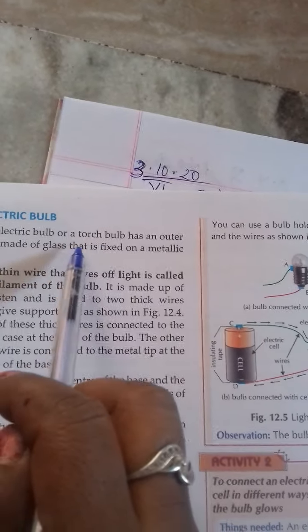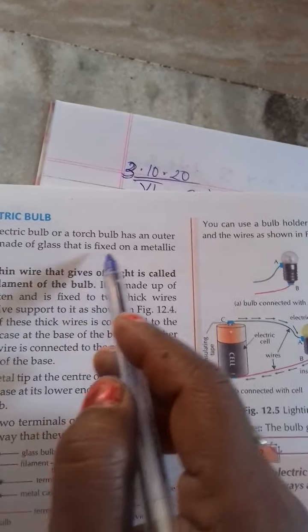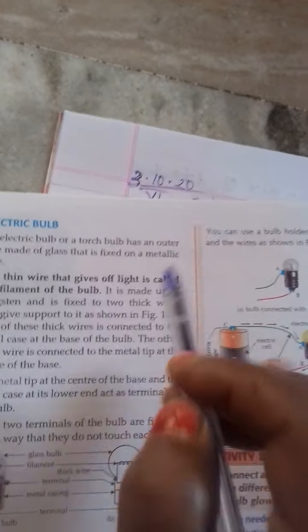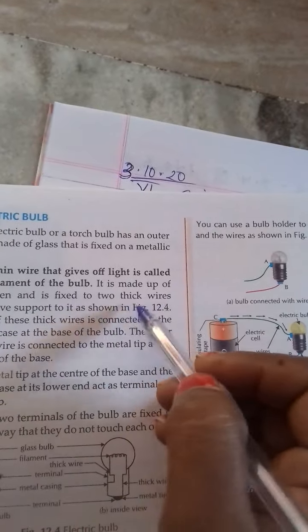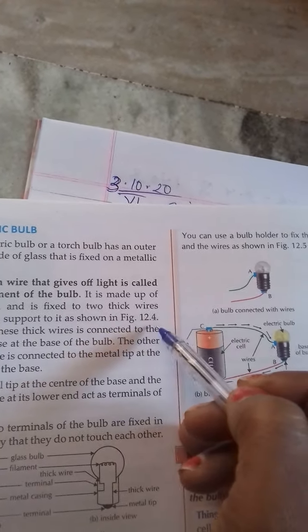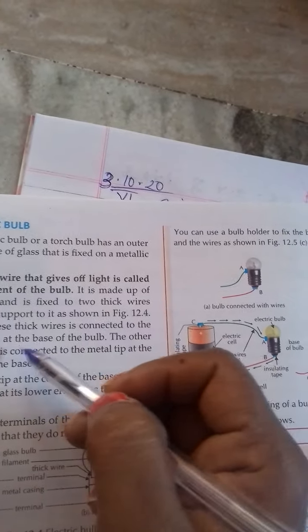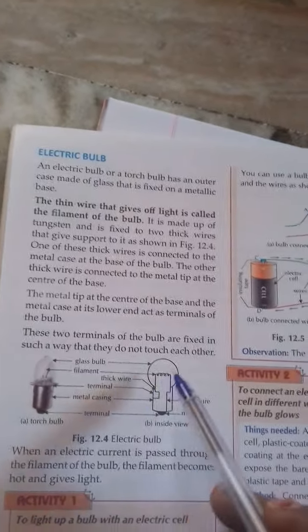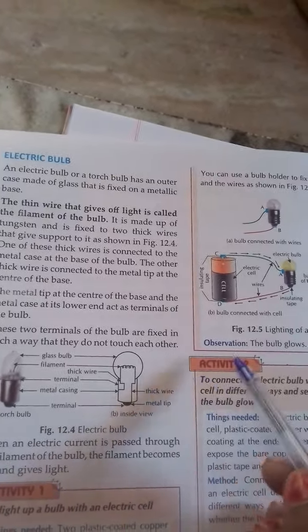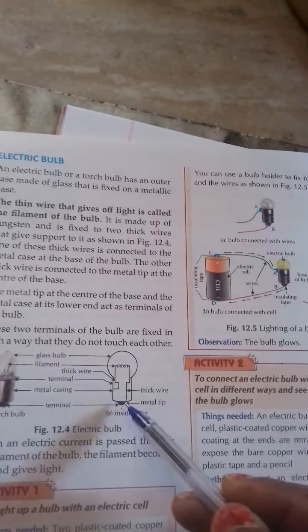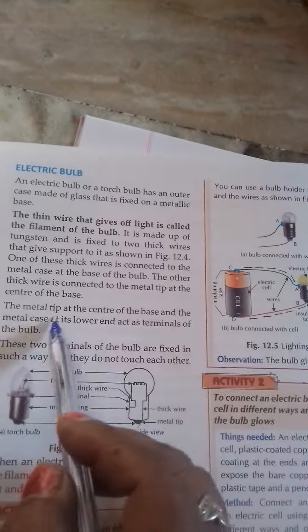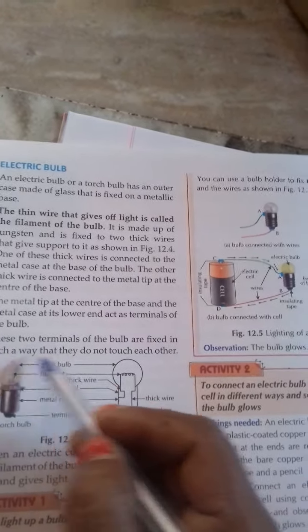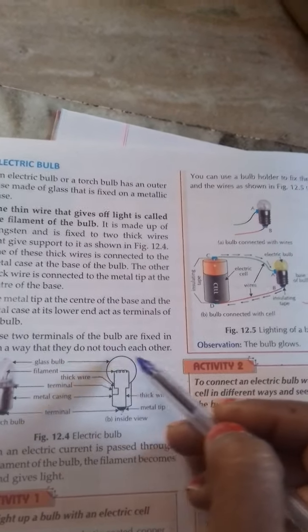Electric bulb: an electric bulb or a torch bulb has an outer case made of glass that is fixed on a material base. The thin wire that gives off light is called the filament of the bulb. It is made up of two thick wires that give support as shown in figure 12.4. One of these thick wires is connected to the metal case of the base of the bulb. The other thick wire is connected to the metal tip at the center of the base. The metal tip at the center of the base and the metal case act as terminals of the bulb. These two terminals of the bulb are fixed in such a way that they do not touch each other.